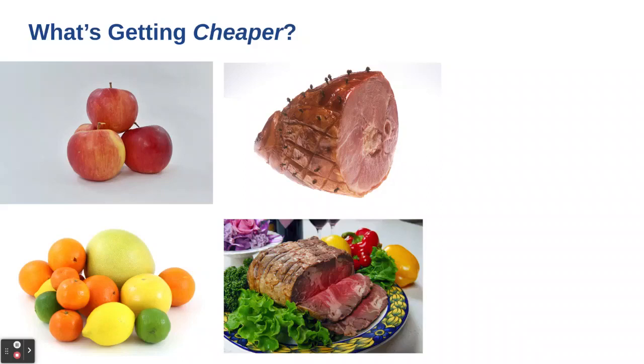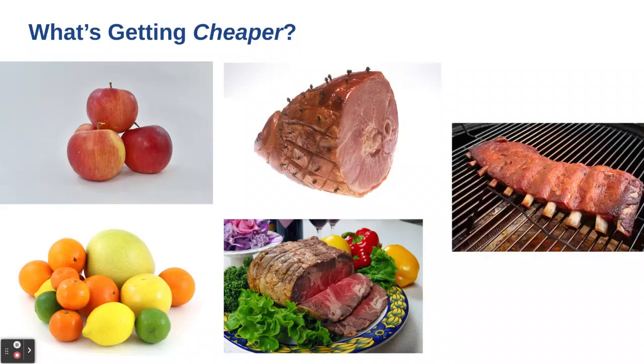Uncooked beef roast down 2.9 percent. So clearly the omnivores have some bounty potentially waiting from them at the grocery store because the next item, pork roast, pork steaks, pork ribs, down 3.3 percent.